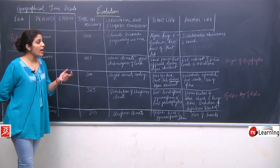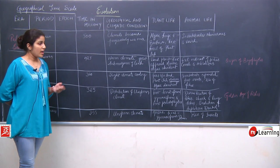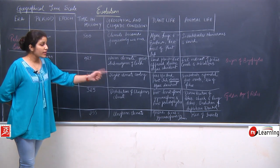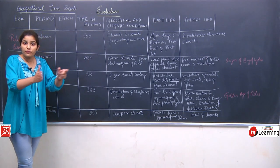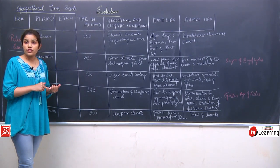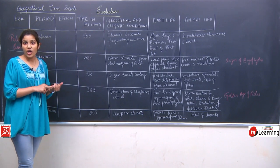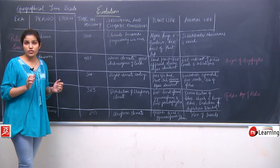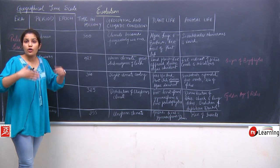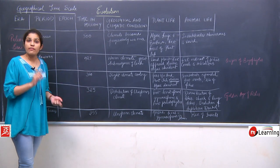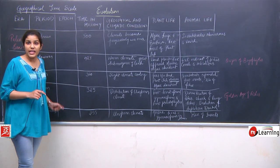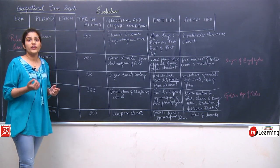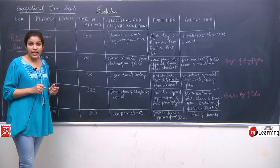In animal life during the Devonian period, there was diversification of fishes — different types of fishes were formed, including normal fishes, sharks, whales, and lungfishes. This diversification of fishes started in the Devonian period, which is also known as the golden age of fishes, where fishes were the dominant organisms.